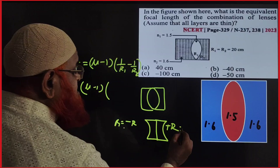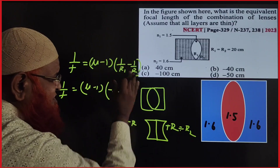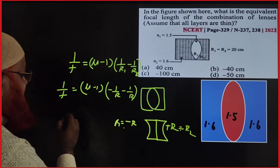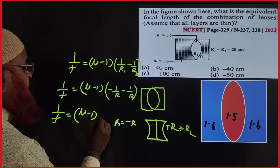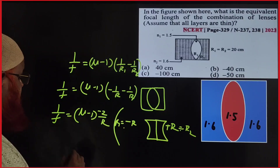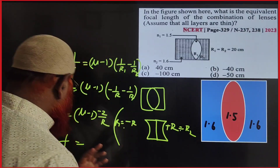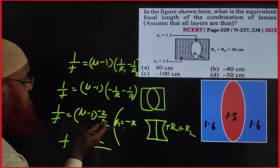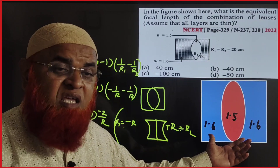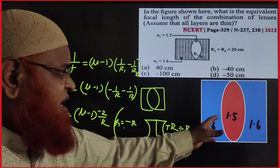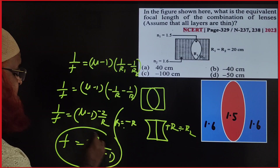So R1 is negative: R1 = -r, and R2 = +r. Substituting: 1/f = (μ - 1)(−1/r − 1/r) = (μ - 1)(−2/r). Therefore, the focal length for an equi-concave lens is f = −r / (2(μ - 1)). This is the shortcut formula for a concave lens — I joined the two plano-concave lenses and derived this shortcut formula.